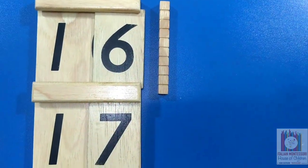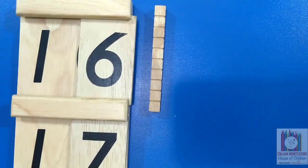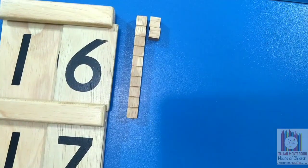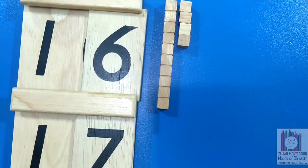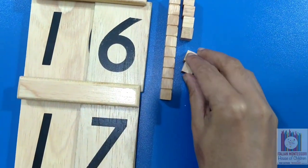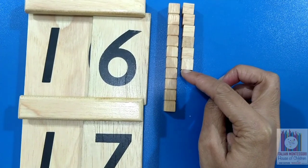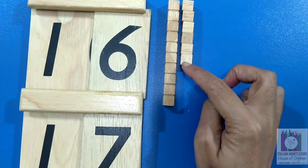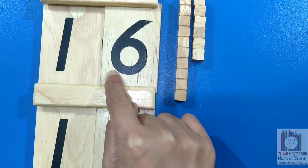1 ten and 6 units makes 16. 1 ten and 6 units. 1 ten and 6 units makes 16. This is the quantity 16 and this is the way we need to write the number 16.